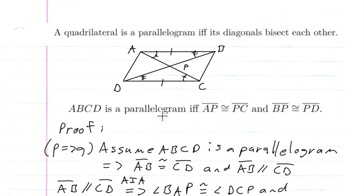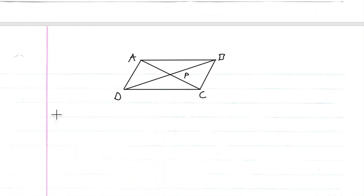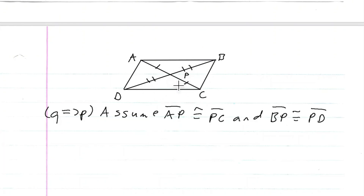That completes the P implies Q direction. Now we prove Q implies P. We assume AP is congruent to PC and BP is congruent to PD. Our goal is to show ABCD is a parallelogram by showing that opposite sides are equal to each other, since equal opposite sides imply a parallelogram.